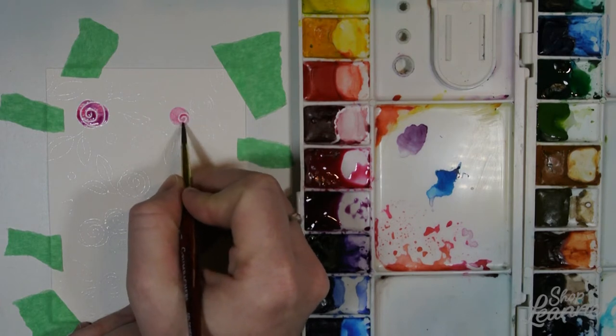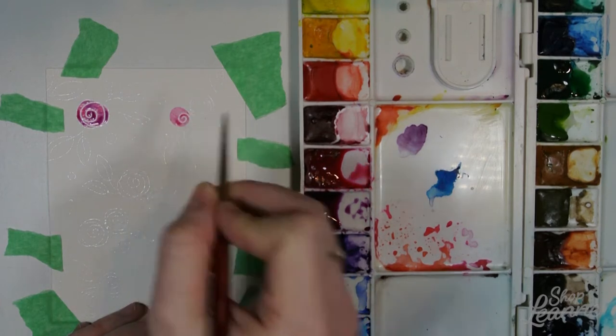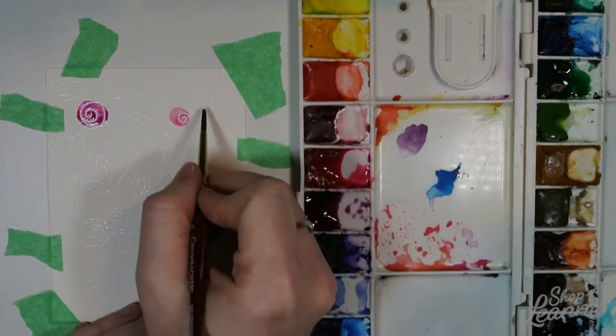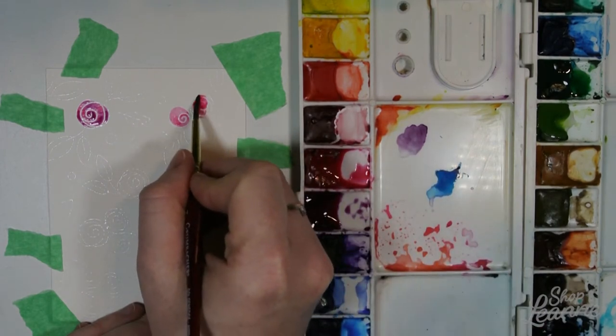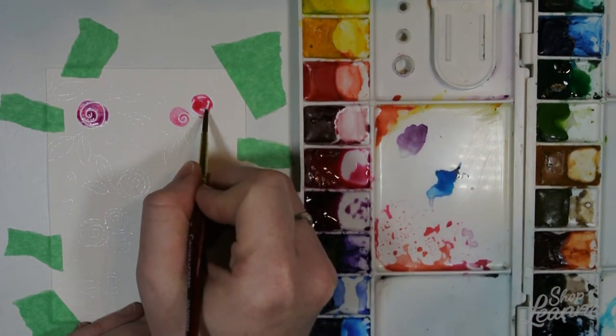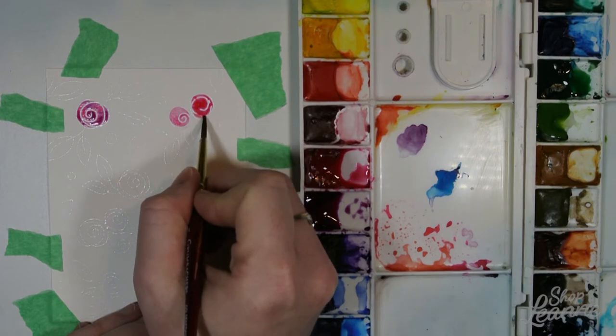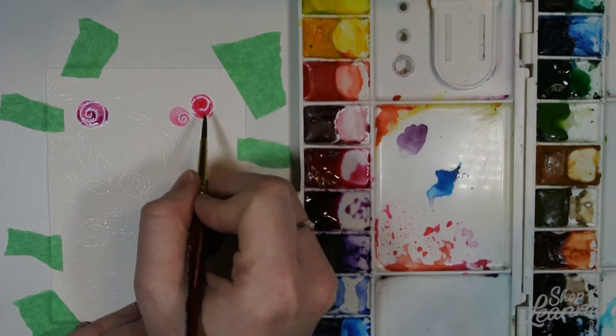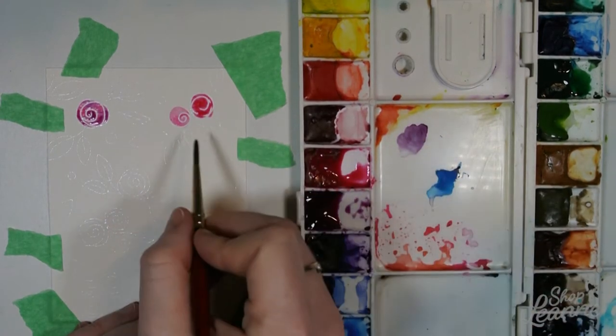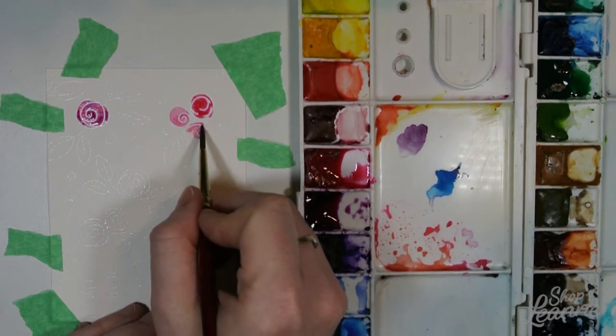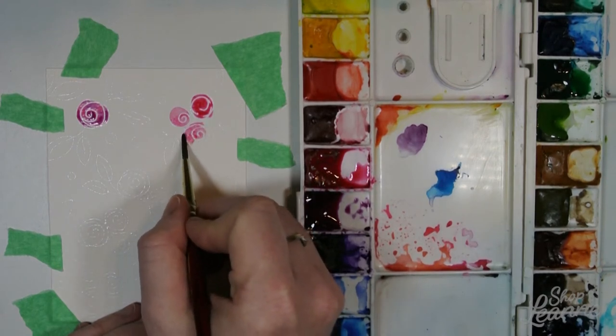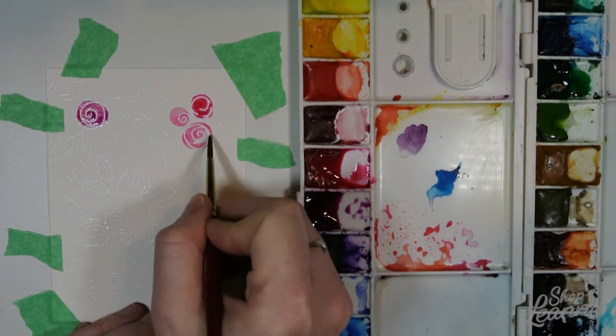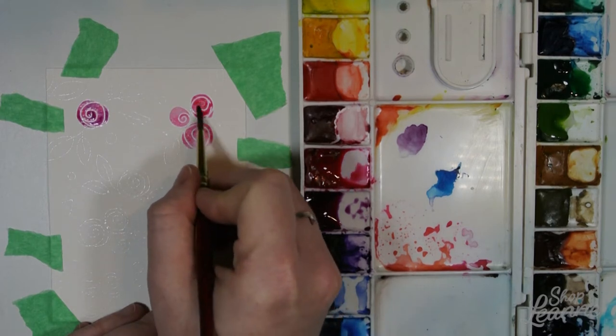And then I came in with Purple Lake and just dropped in some little bits into that Permanent Rose. There was no real decision making on that, just sort of thinking about maybe where it might be as a shadow area. I knew that if I put the Permanent Rose color down and made sure it was nice and wet, when I dropped the Purple Lake color on top of it it would run out a little bit and create a nice gradient.